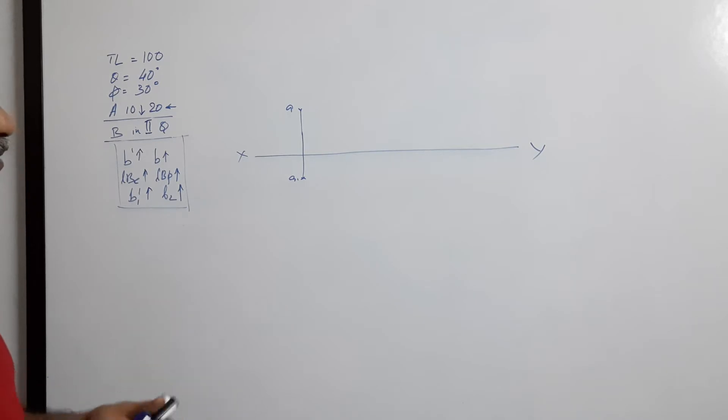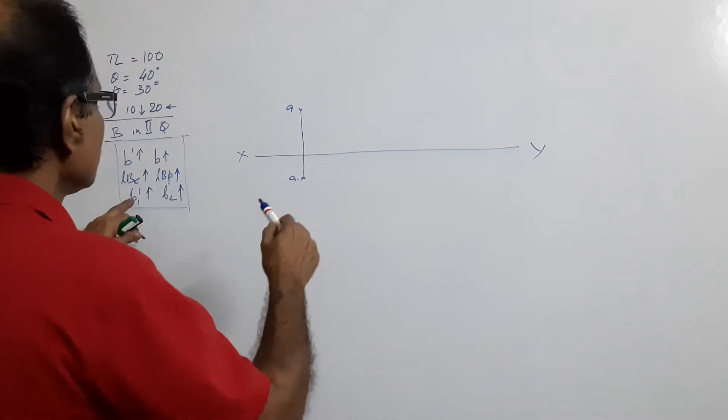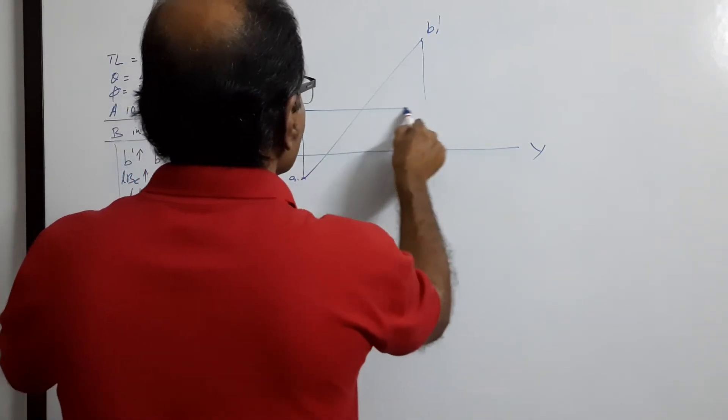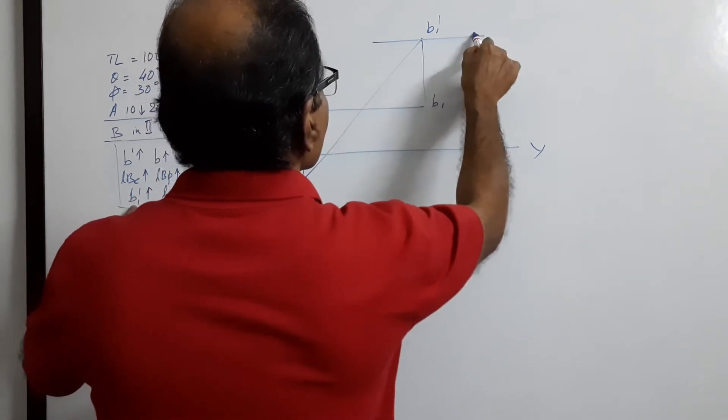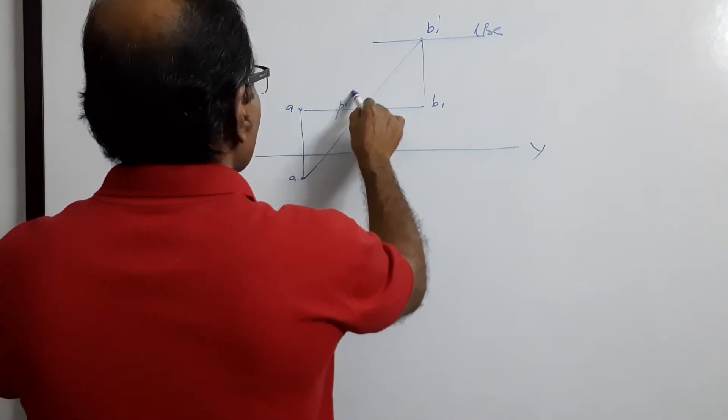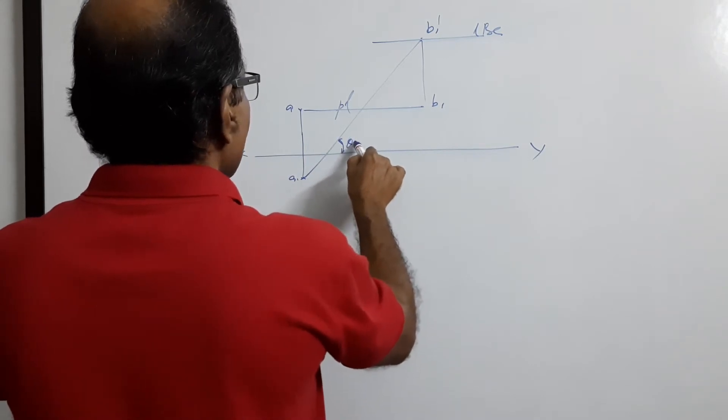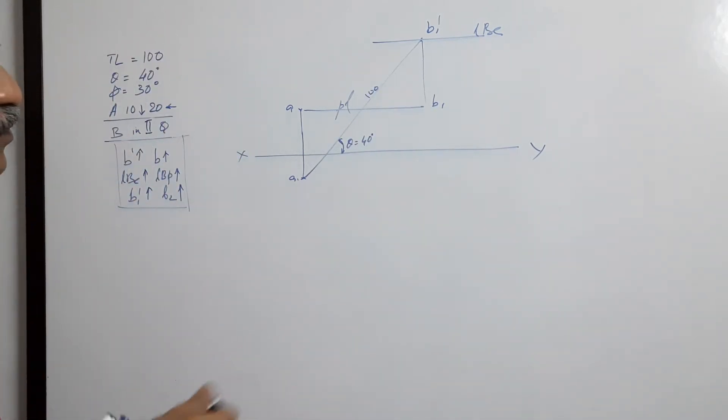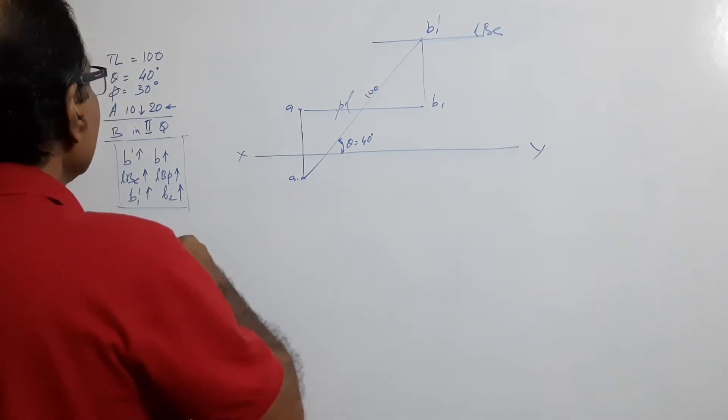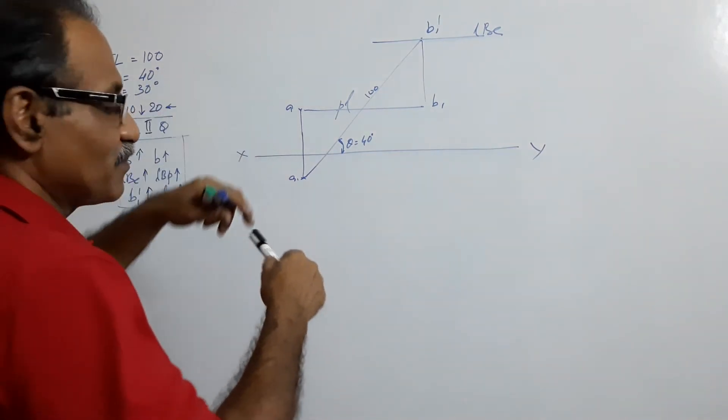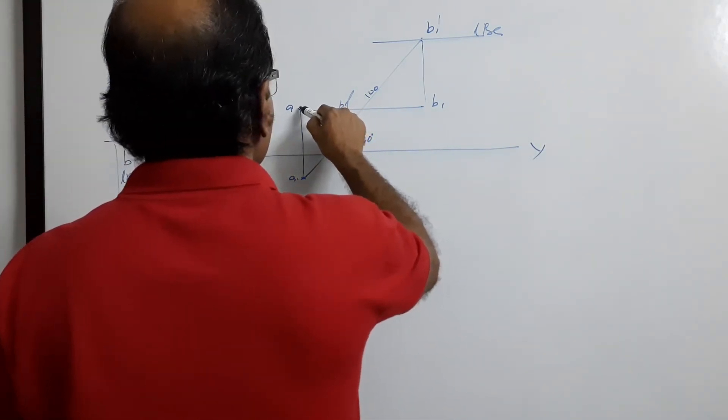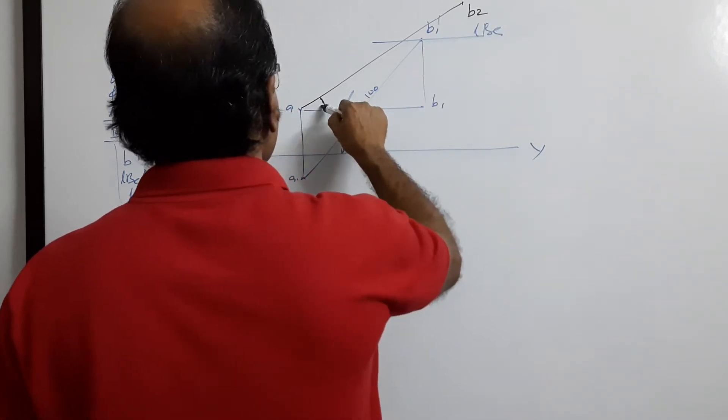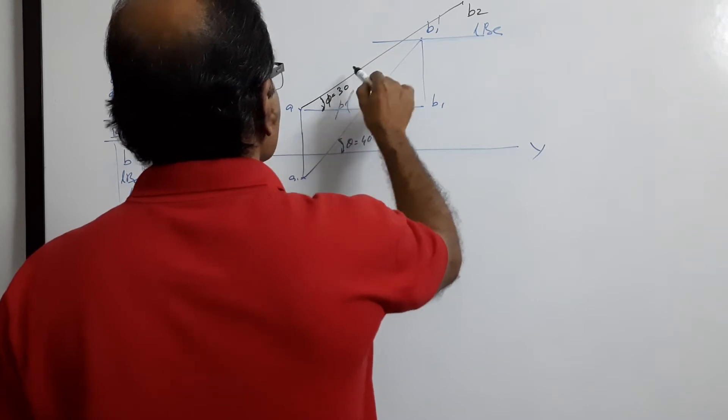A dash 40 degrees, theta equals 40 degrees, 100. First case value A 30 degrees. We do, 5 equals 30, 100.